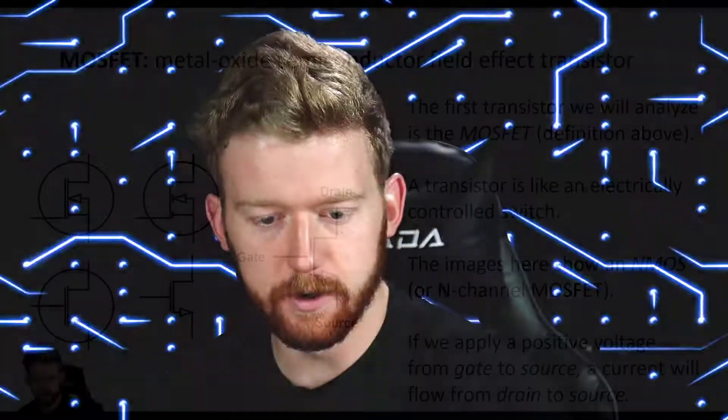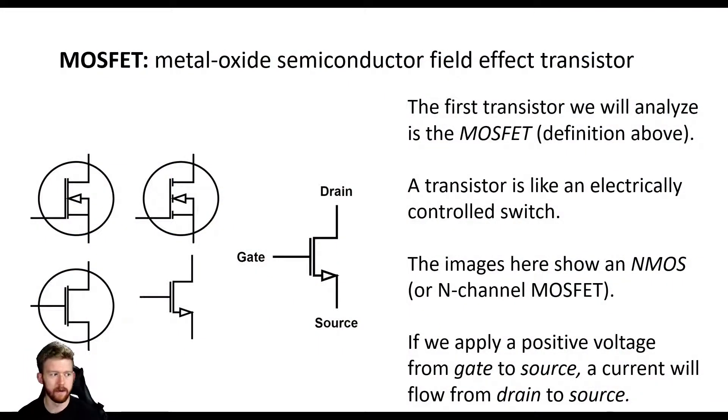Now we're going to switch gears and start talking about transistors, which are another example of a base electronic component. The first transistor we're going to talk about is a MOSFET.